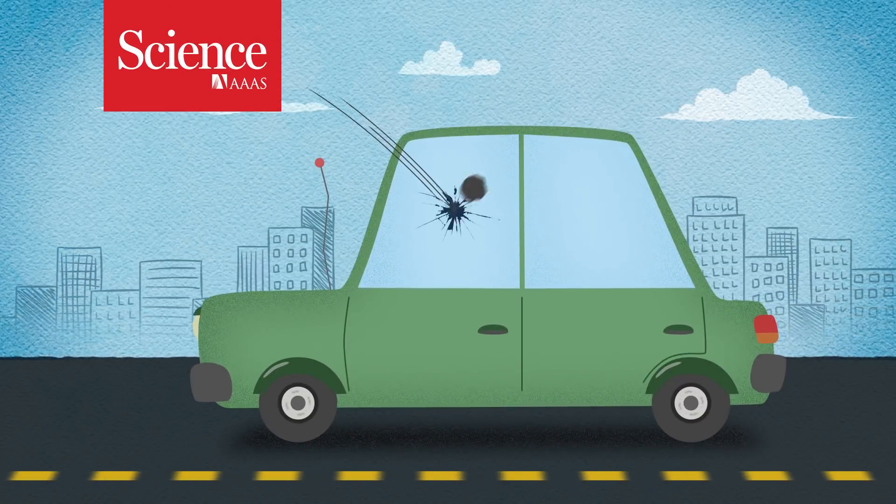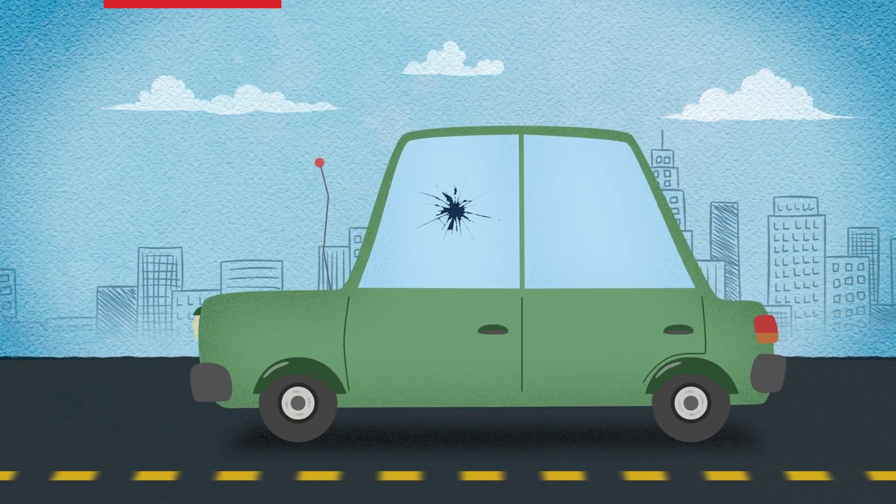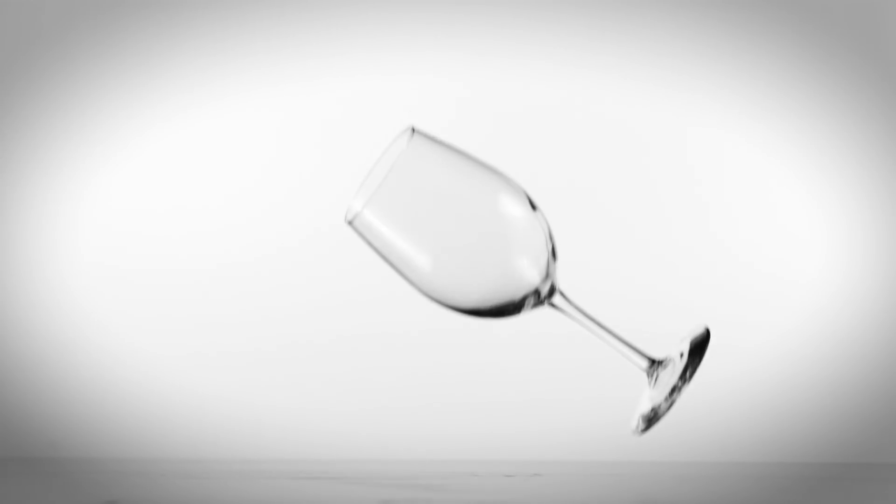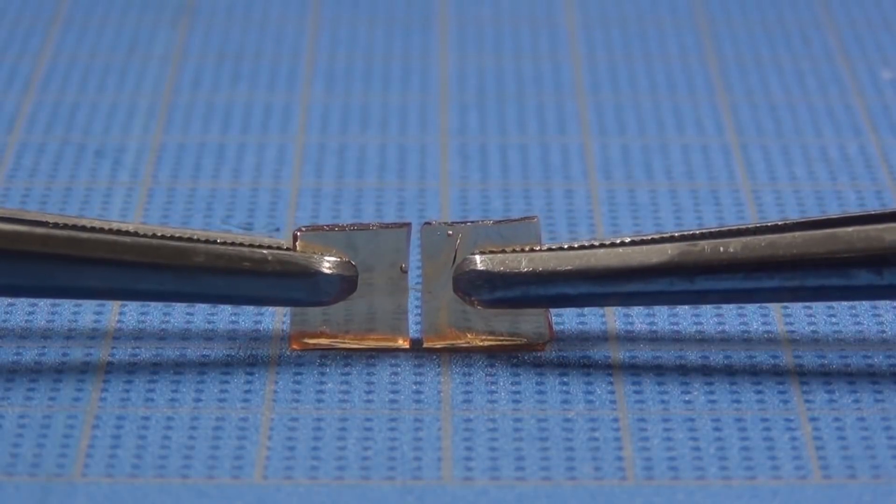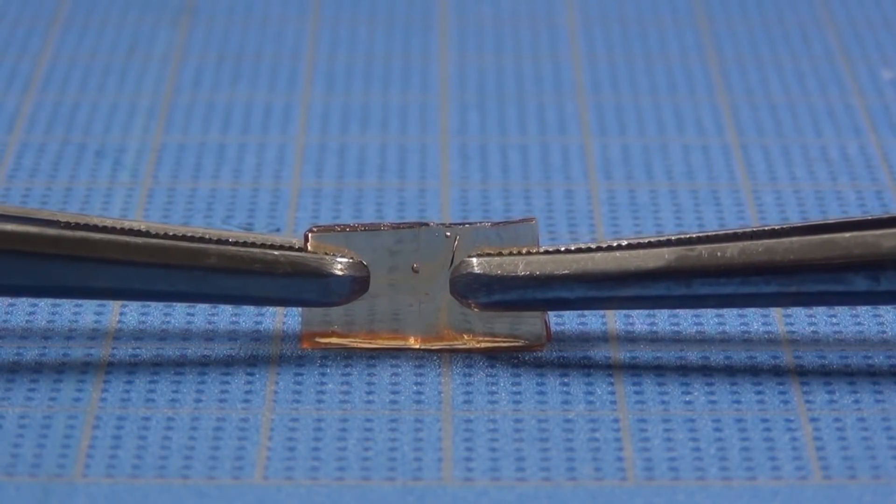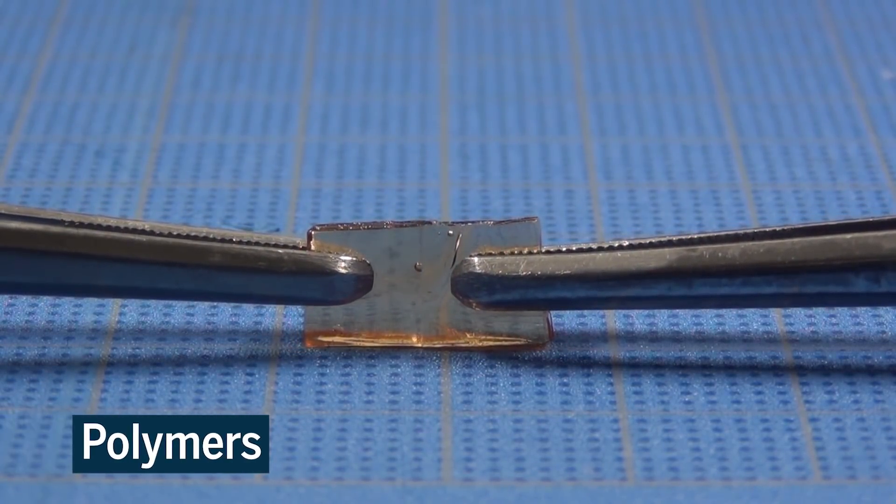Has this ever happened to you? While glass and plastic can shatter and crack, researchers have been hard at work developing materials that can be easily reassembled using strings of molecules called polymers.